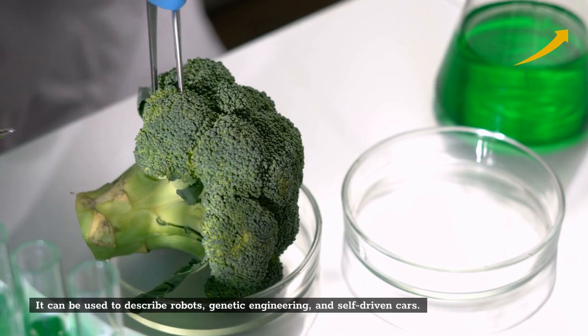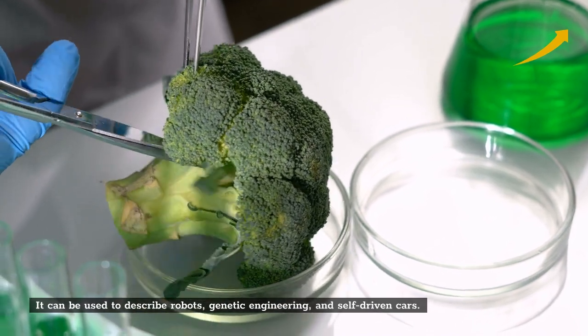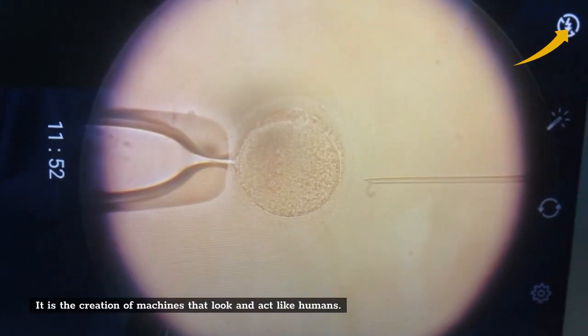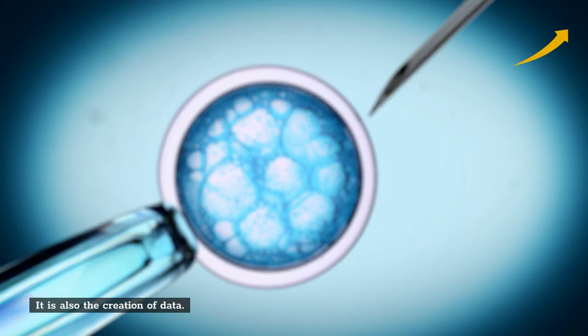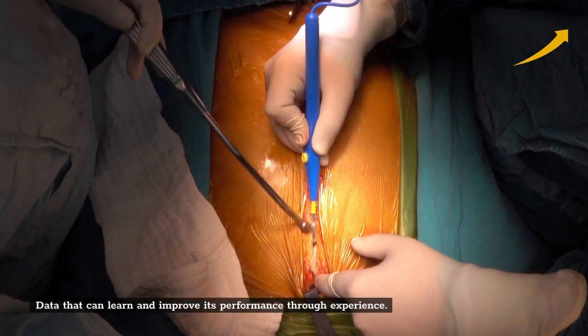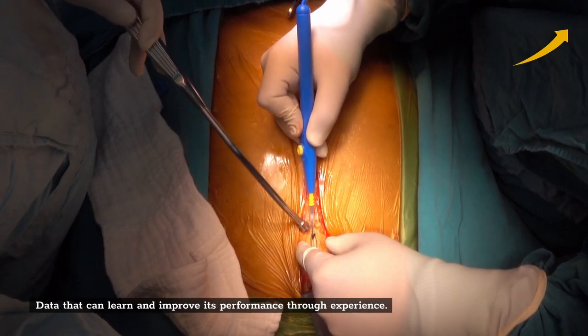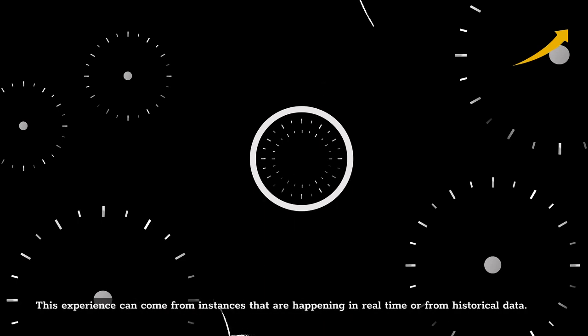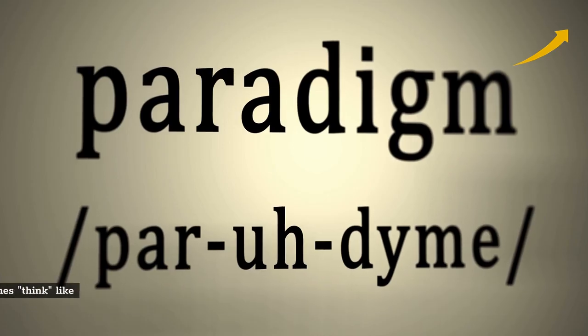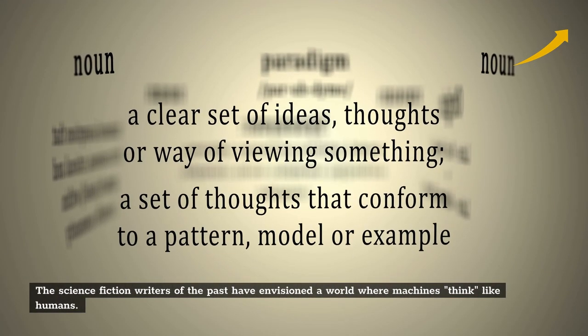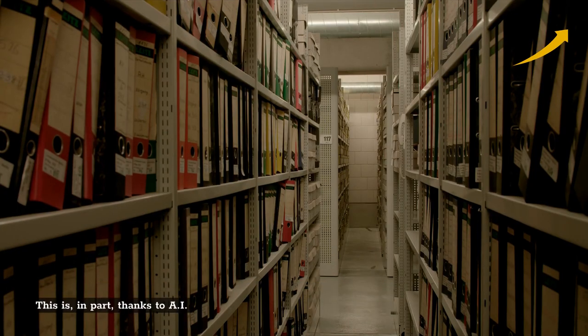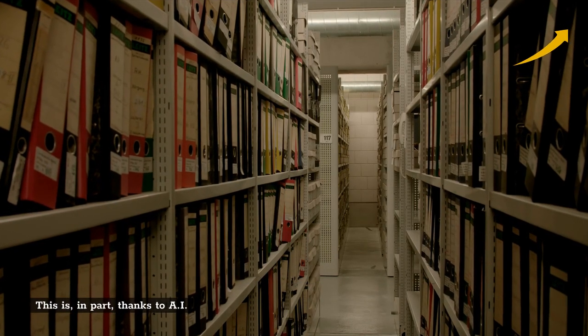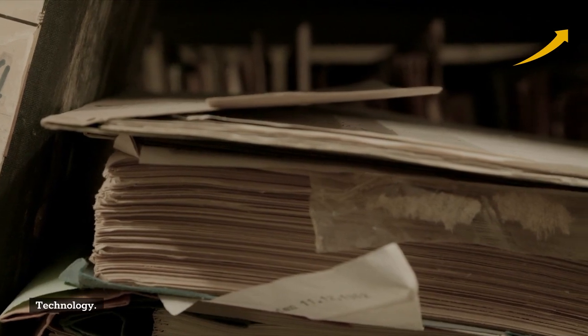It can be used to describe robots, genetic engineering, and self-driven cars. It is the creation of machines that look and act like humans. It is also the creation of data that can learn and improve its performance through experience. This experience can come from instances happening in real time or from historical data. The science fiction writers of the past have envisioned a world where machines think like humans. This is in part thanks to AI technology.